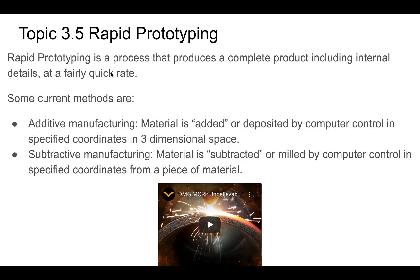Rapid prototyping is essentially producing a complete product with its internal detail fairly quickly. 3D printing is an example — probably the best example that you know of right now.